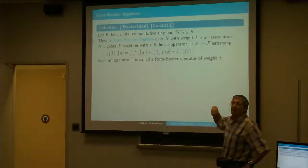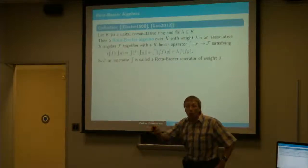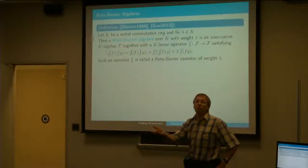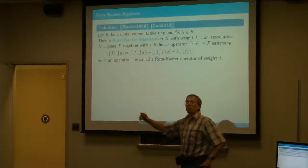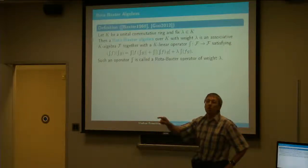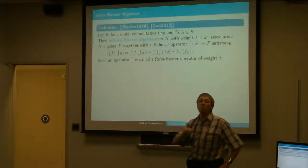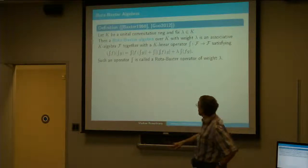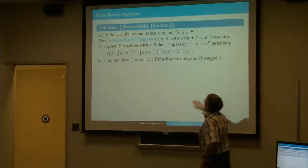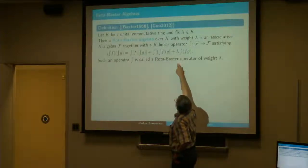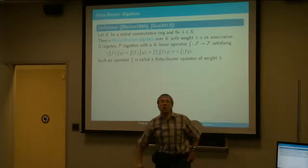It is just integration by parts written in a clever way that avoids mention of the derivation. If you write down the usual integration by parts formula and then substitute an anti-derivative for the function appearing in the derivation, then you get essentially this axiom here. Except that if you do the standard integration, you will not get the last term.